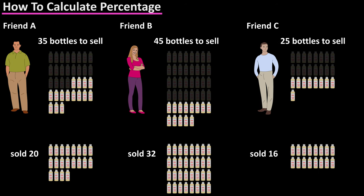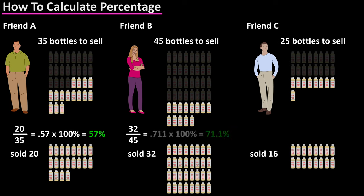You can use percentages to evaluate who is the better salesperson. 20 parts sold over 35 total parts for Friend A, which results in 71.1 percent sold. And 16 parts sold over 25 total parts for Friend C, which results in 64 percent sold.